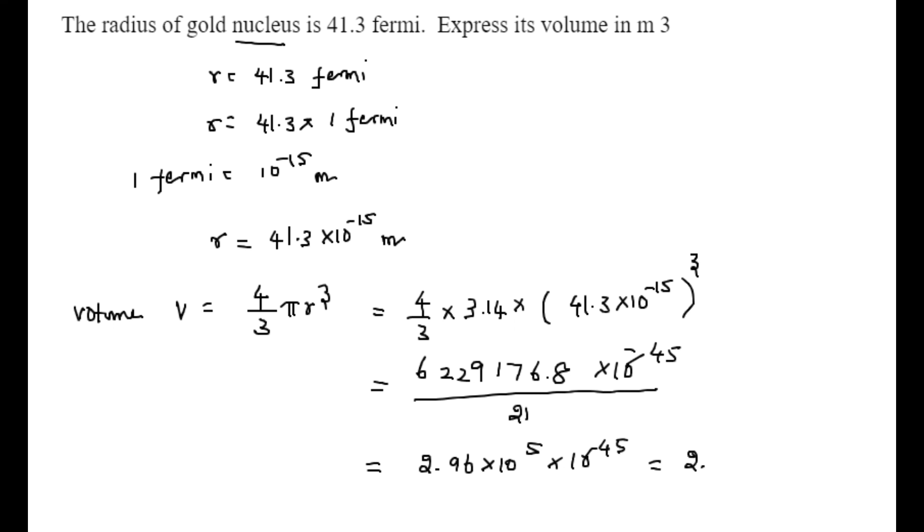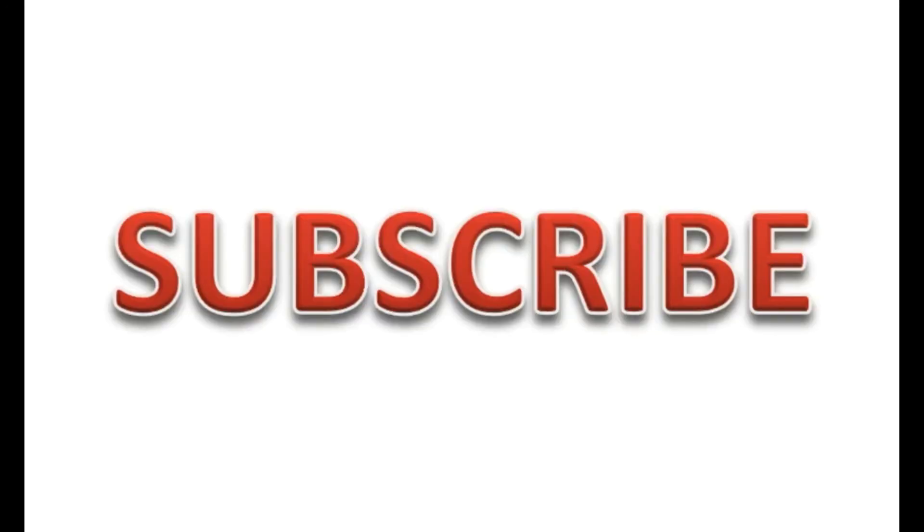So on combining the powers of 10, we get 2.96 into 10 power minus 40 meter cube.